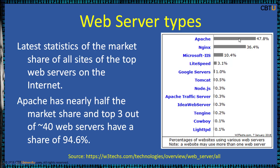These are the latest statistics of the market share of all sites of the top web servers on the internet. Apache has nearly half the market share. The top three — Apache, Nginx, and Microsoft IIS — out of roughly 40 web servers have a market share of 94.6%, with the remaining servers contributing the other 5%.